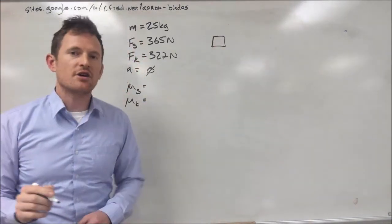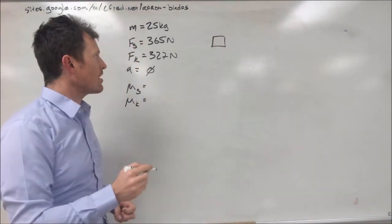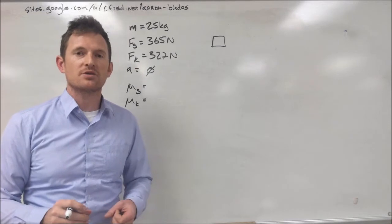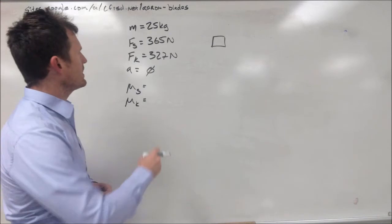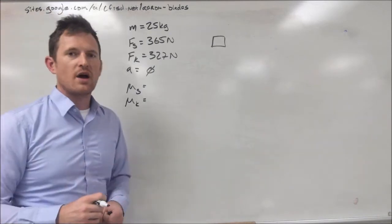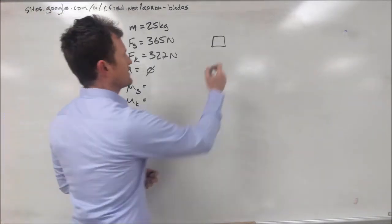There. Now I've started my free body diagram. We usually draw with a regular old box, or maybe a circle, just to make things more simple. So, now that we have everything in here, let's go ahead and write out our forces acting on our object.